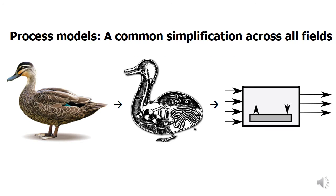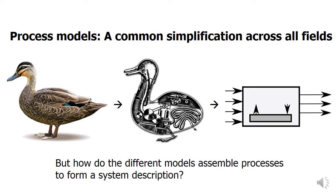We start with a general idea of how to model a process in industrial ecology and related fields. We would take a natural or industrial process — like this duck here — and first understand how it works in physical terms. This would be the middle picture of a mechanical duck, which we then convert into a black-box model of the process with flows coming in, stocks inside, and flows leaving. The question is how the different models of industrial ecology assemble those processes to form a comprehensive system description.